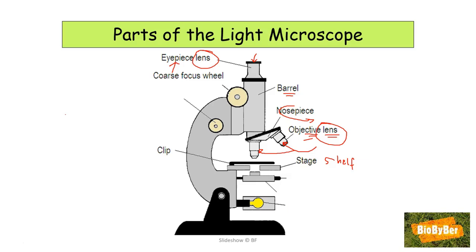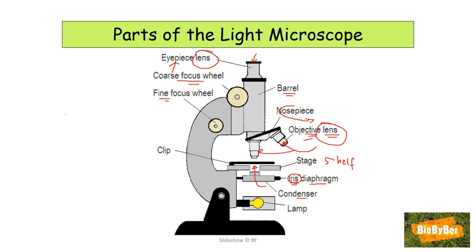The coarse focus wheel can be used to bring the specimen roughly into focus. To fine-tune the image and make it less blurry, one has to use the fine focus wheel. The condenser helps to focus the light from the mirror or the bulb up through the hole in the stage and up through the specimen. You can control the amount of light that comes through the stage by means of a lever called an iris diaphragm. The iris diaphragm links in with the iris of the eye, which controls the amount of light entering the eye — similarly, the iris diaphragm controls the amount of light going up through the specimen.